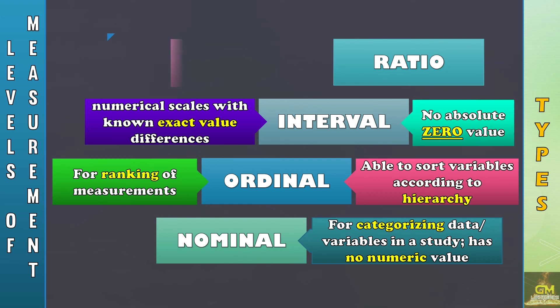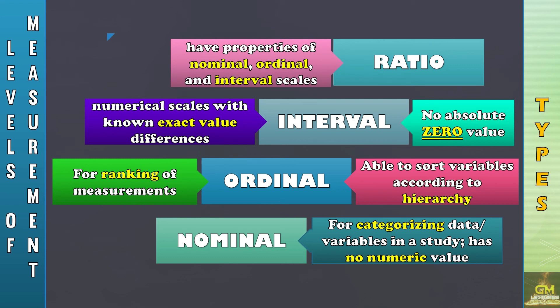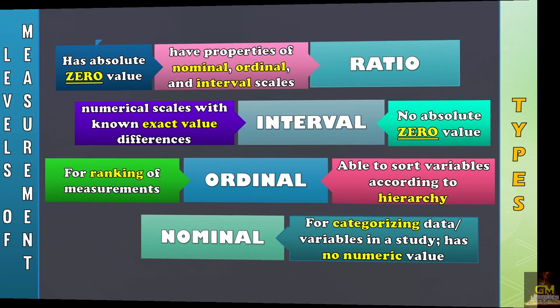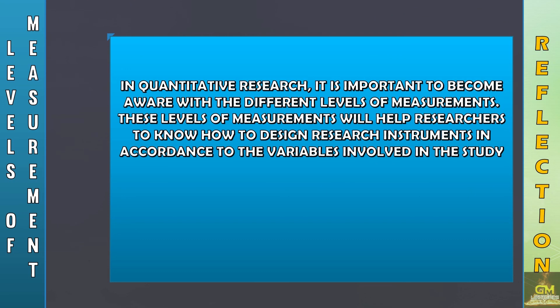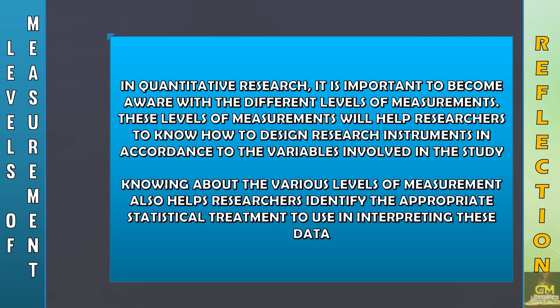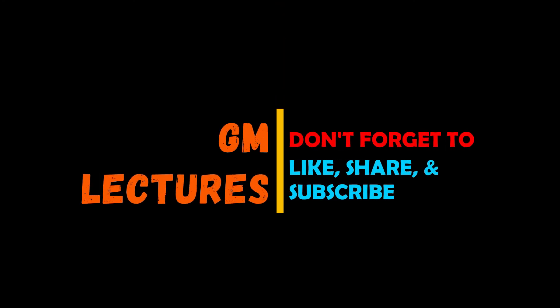The ratio level of measurement has properties of nominal, ordinal, and interval scales. Furthermore, unlike the interval level of measurement, the ratio level of measurement has absolute zero value. In a nutshell, in quantitative research, it is important to become aware of the different levels of measurement. These levels of measurement will help researchers know how to design research instruments in accordance with the variables involved in the study. Knowing about the various levels of measurement also helps researchers identify the appropriate statistical treatments used in interpreting these data. Thank you.